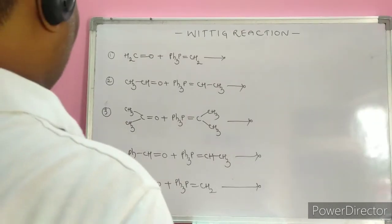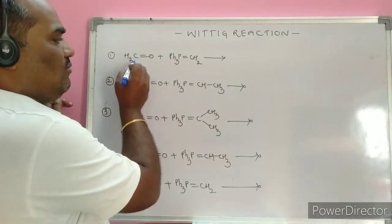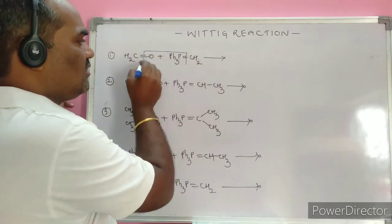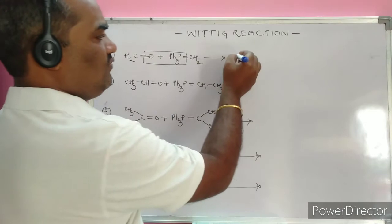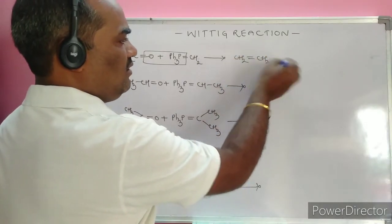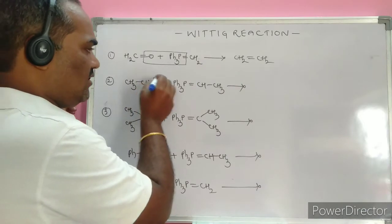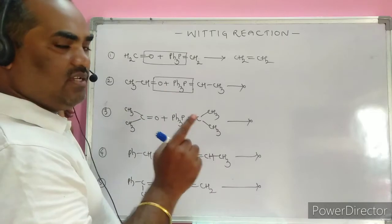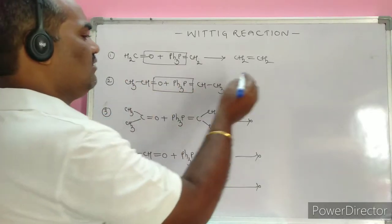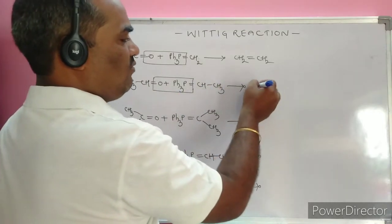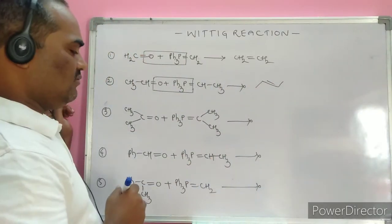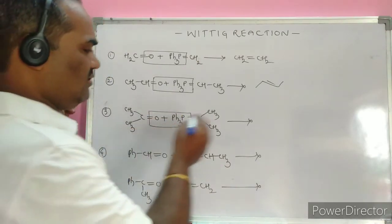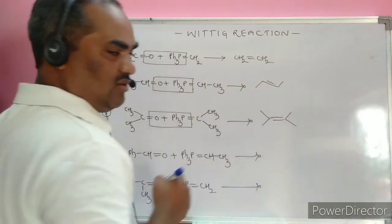Now for examples of the Wittig reaction. When formaldehyde (methanal) is the carbonyl compound, the product formed is ethylene. When acetaldehyde is used, the ylide provides one additional carbon, giving a four-carbon alkene: 2-butene (one, two, three, four carbons).